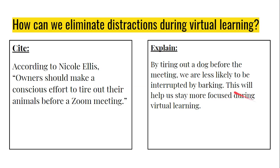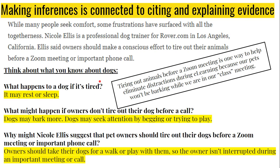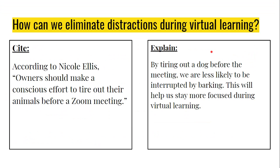So if the question given to me is: 'How can we eliminate distractions during virtual learning?' — I know by looking back at the passage I read that one piece of evidence that proves the answer is that owners should make a conscious effort to tire out their animals. But remember, when I cite information, I cannot just put the quote. I also have to introduce where I found it or who said it. So my example of citing is: 'According to Nicole Ellis' — notice I said where I got this information — 'owners should make a conscious effort to tire out their animals before a Zoom meeting.' Now I've included a quote to prove my point.